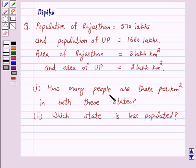Part 1: How many people are there per km² in both these states? Part 2: Which state is less populated? For this question we will take the help of the Unitary Method, in which we first find the value of 1 unit and then the value of the required number of units.